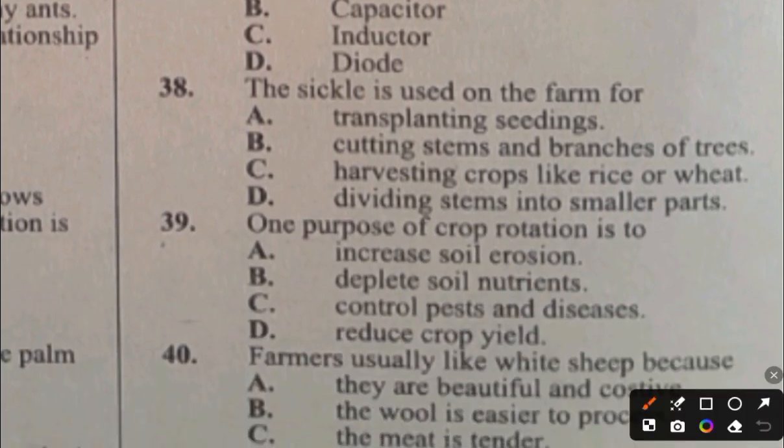Question 38. The sickle is used on the farm for: A. Transplanting seeds, B. Cutting stems and branches of trees, C. Harvesting crops like rice or wheat, D. Dividing stems into smaller parts. The answer to question 38 is C, harvesting crops like rice.